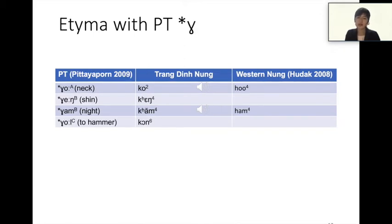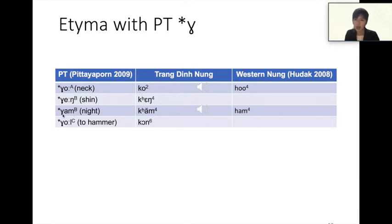This table shows etyma with prototype *g. The word 'neck' has A-tone and in Chanding NUN is ko. The word 'night' has B-tone and in Chanding NUN is kam. As you can see, prototype *g without B-tone is realized as k, and *g with B-tone is also realized as k in Chanding NUN. In Western NUN, *g is realized as h regardless of tone.